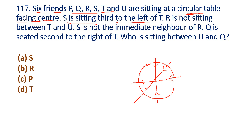We need to place S third to the left of T. For example, T is placed — going left: first left, second left, third left — S is at third left from T. Second clue: R is not sitting between T and U.